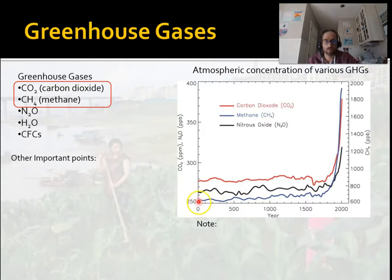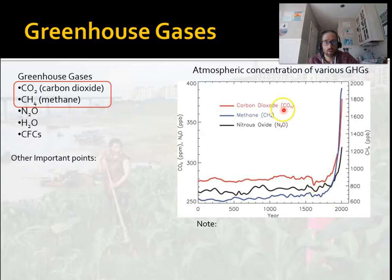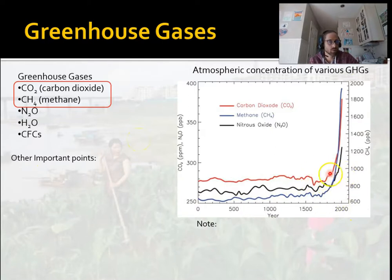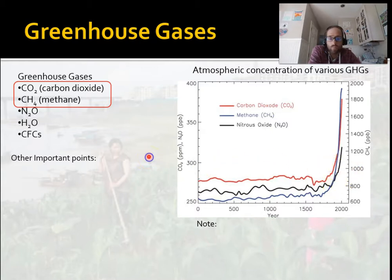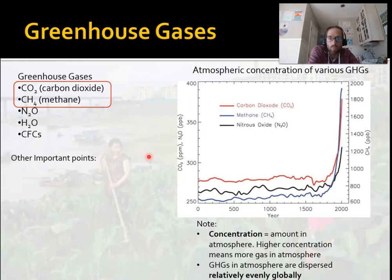Concentration means the amount of greenhouse gases in the atmosphere. You can see the methane and CO2 lines are relatively steady, and then right around 1700–1800 they really shoot up. If you know basic history, this is right around the time of the industrial revolution — we started burning a lot of fossil fuels at that point. Not coincidentally, as we burned more fossil fuels, the concentrations went up.